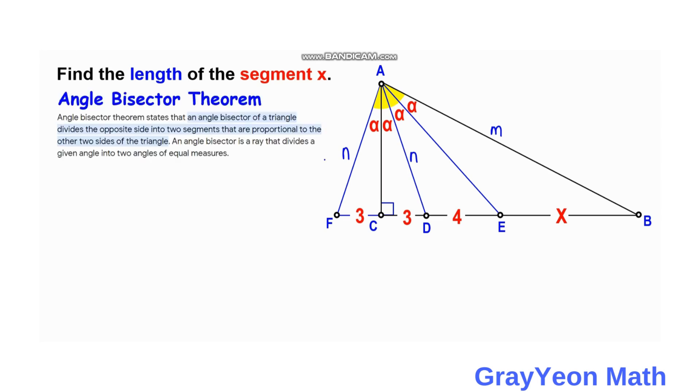Next, we review the angle bisector theorem. The angle bisector theorem states that an angle bisector of a triangle divides the opposite side into two segments that are proportional to the other two sides of the triangle. An angle bisector is a ray that divides a given angle into two angles of equal measures.